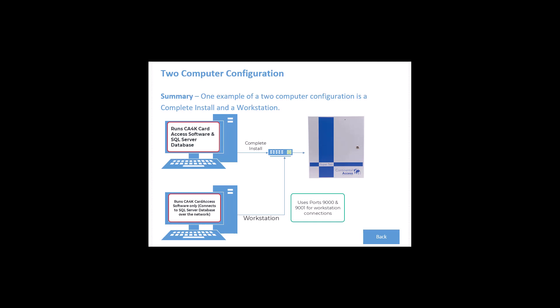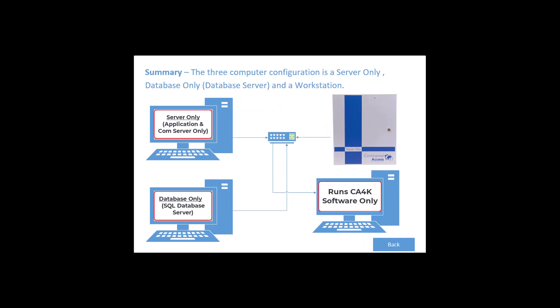The second configuration consists of a complete install and a workstation install, requiring a total of two computers. The third configuration consists of a server-only installation on the CA4K host, a database-only install, and a workstation install, requiring a total of three computers. The database-only installation is also called a database server, whose primary function is to have SQL installed on it along with the CA4K live and archived databases.